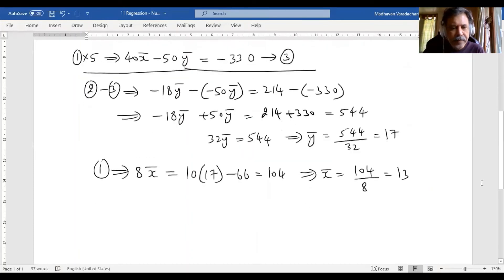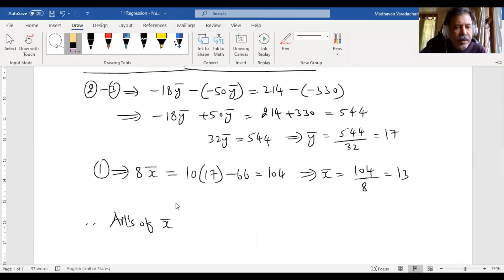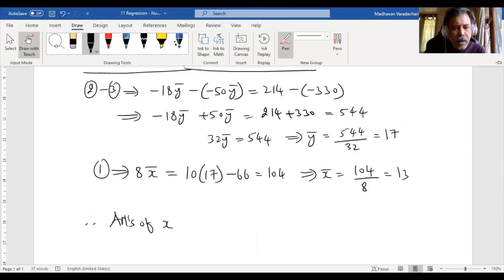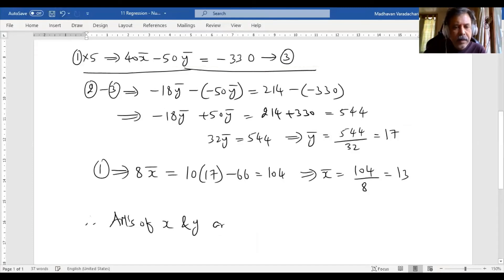Therefore, the arithmetic means of X and Y are X̄ = 13 and Ȳ = 17.